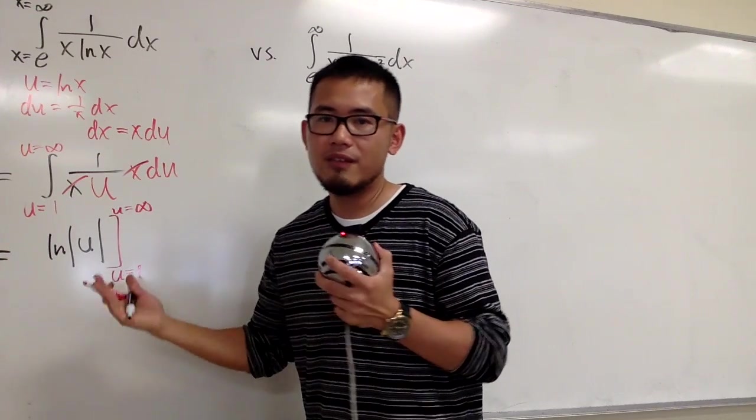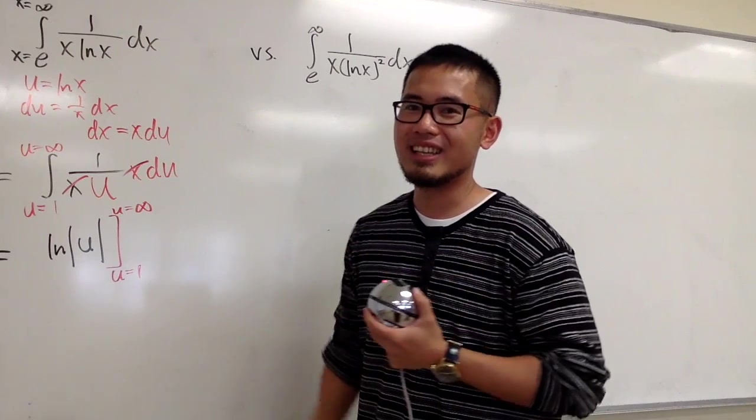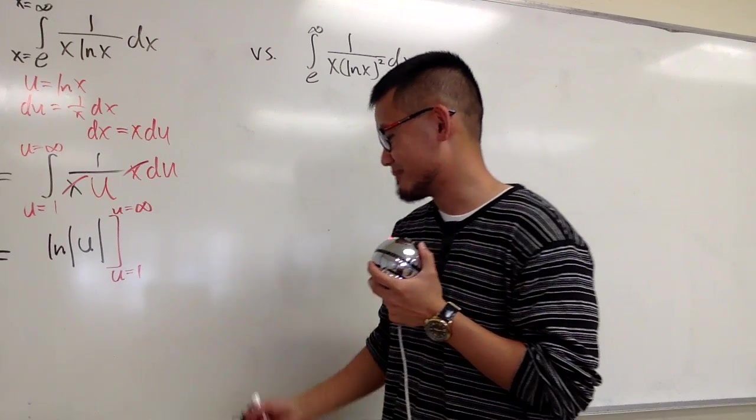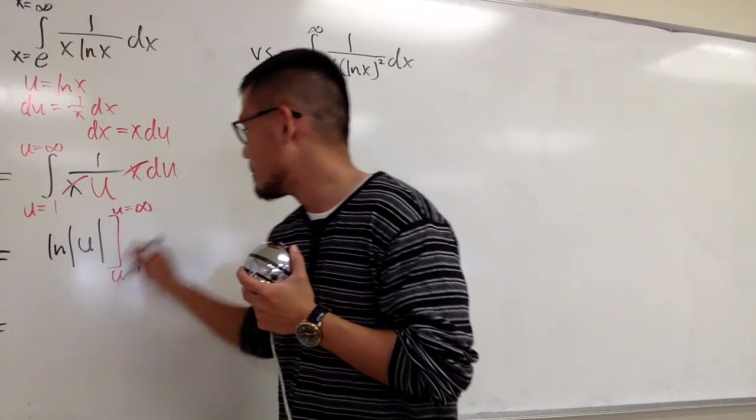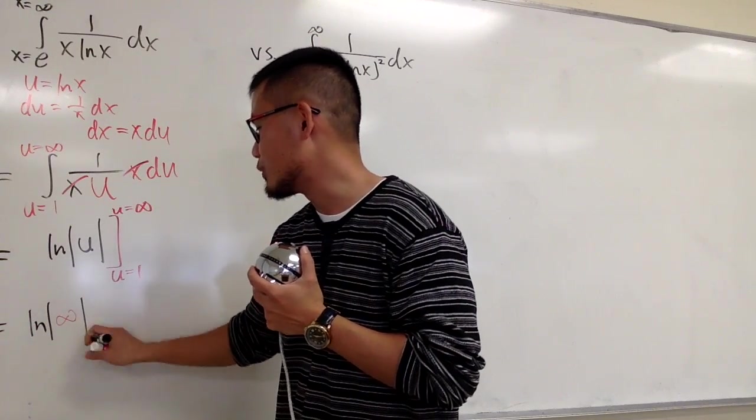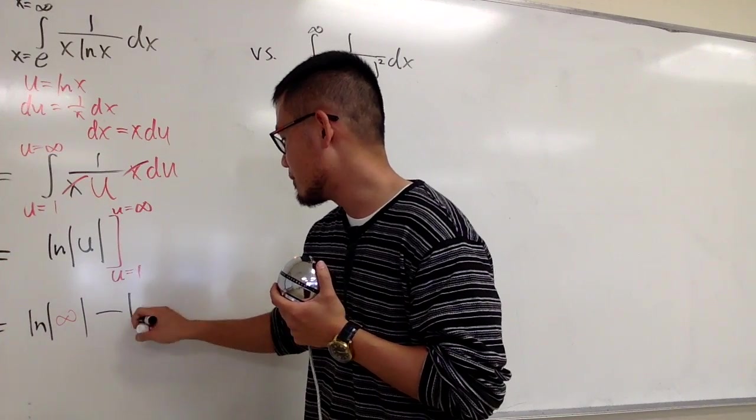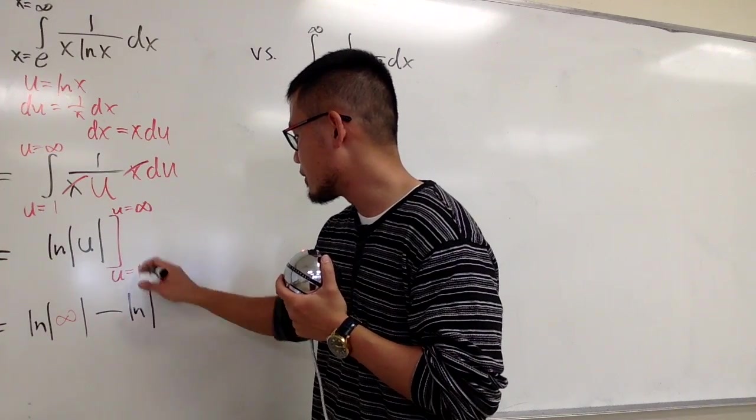With that being said, I can just plug in values where u is equal to 1 up to u is equal to infinity. And when we are plugging infinity, in fact, we are taking limits. But this is just a shorthand to write this kind of improper integrals down. Anyways, plugging infinity, taking the limit of ln when u approaches infinity, and then plugging 1 by subtracting. So minus ln absolute value of 1.